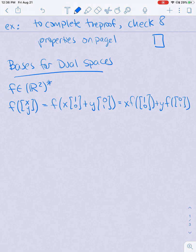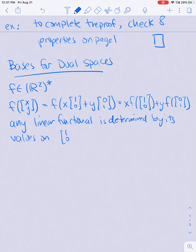So it seems like any linear functional is determined by its value on the pair (1, 0) and (0, 1). And so what could be the simplest possible non-trivial linear functional?